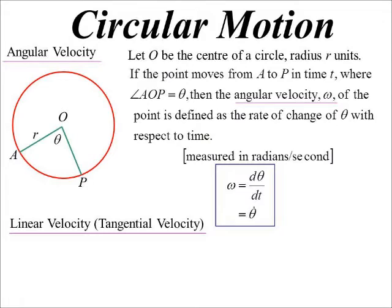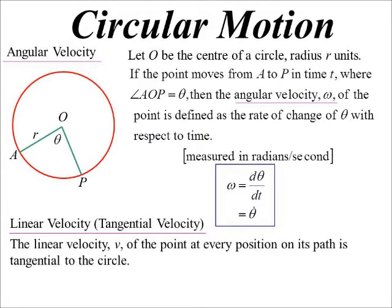it's sort of like imagining you cut the string and the particle would fly off at a tangent to the circle. So that's, I guess, how it gets its name, tangential velocity.